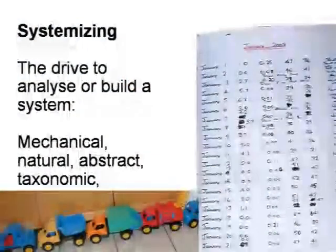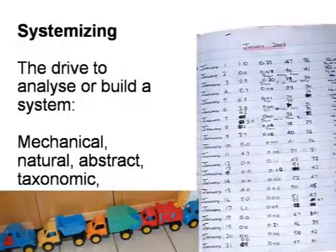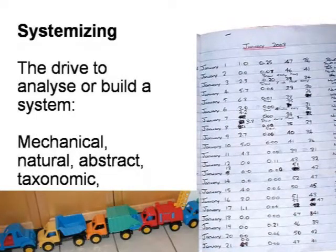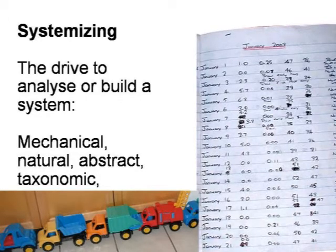Systemizing is a very different kind of process, defined as the drive to analyze or build a system — any kind of system. This includes mechanical systems like a computer, natural systems like the weather, abstract systems like mathematics, or a taxonomic system — a collection where you're trying to systematically organize information.